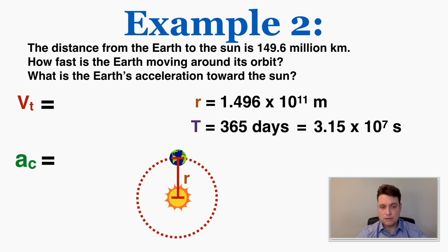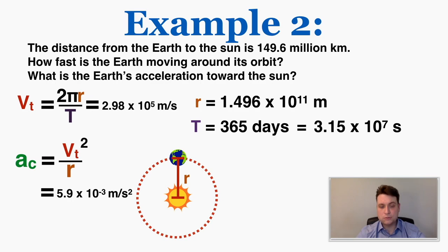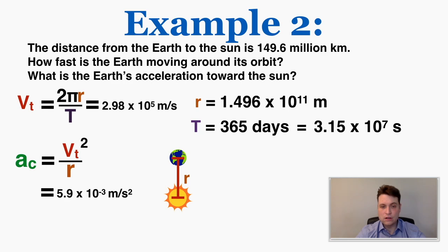Plugging into 2πr / T gives v_t = 2.98 × 10⁵ m/s. The centripetal acceleration is v² / r, and plugging in the numbers gives a very small acceleration for Earth. This makes sense — Earth is only changing its direction at a very small rate because it takes a full year to completely change its velocity's direction all the way around the circle. That's how you solve circular motion problems: draw out the variables, plug them into the equations, and find the missing information.